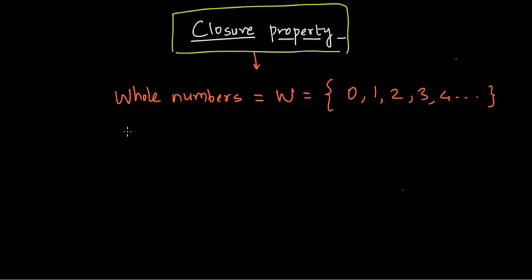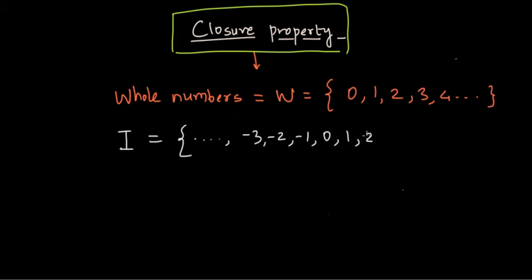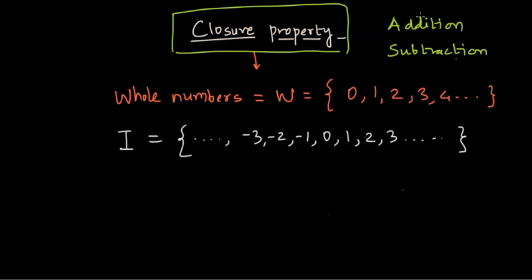What we are particularly interested in this video is closure property for addition and subtraction for integers. Integers include negative integers: minus three, minus two, minus one, and so on — this is how we represent the set of integers. We'll select any two numbers, perform addition and subtraction, and see whether the output exists in the same set.